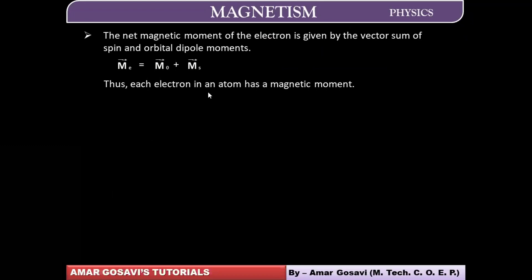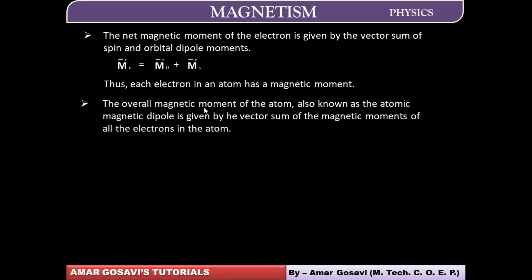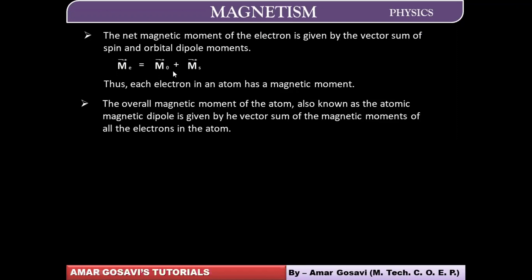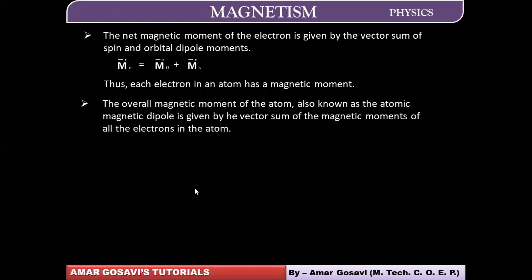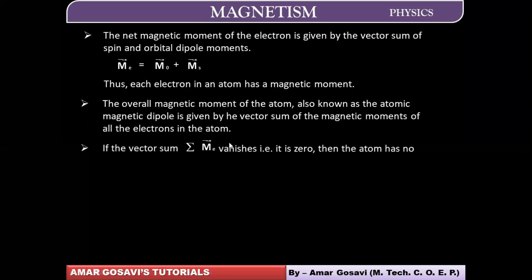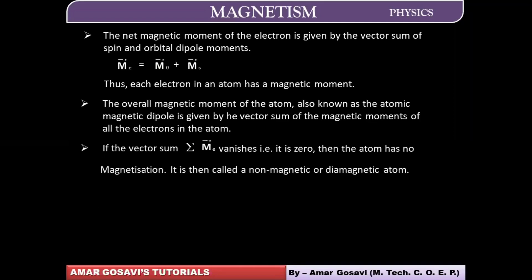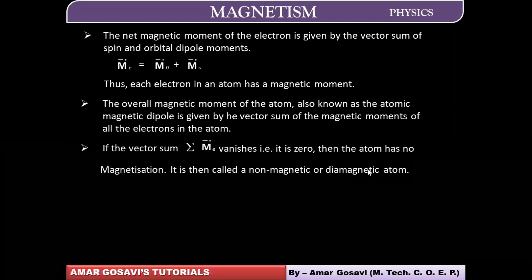We can say that an electron has a magnetic moment. Now, if the resultant overall magnetic moment becomes zero — how can it become zero? Because of the motion of different electrons in an atom, they may nullify each other's effect. The spin effect may be nullified — clockwise nullifies anticlockwise — and different directions of orbital motion would nullify the orbital moment also. If the vector sum vanishes, there won't be any resultant magnetic moment and the material won't behave like a magnet. We call that a non-magnetic material or diamagnetic atom.